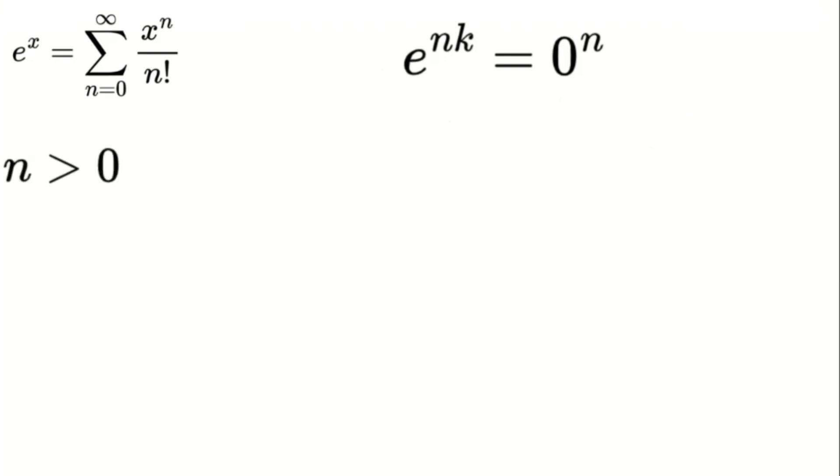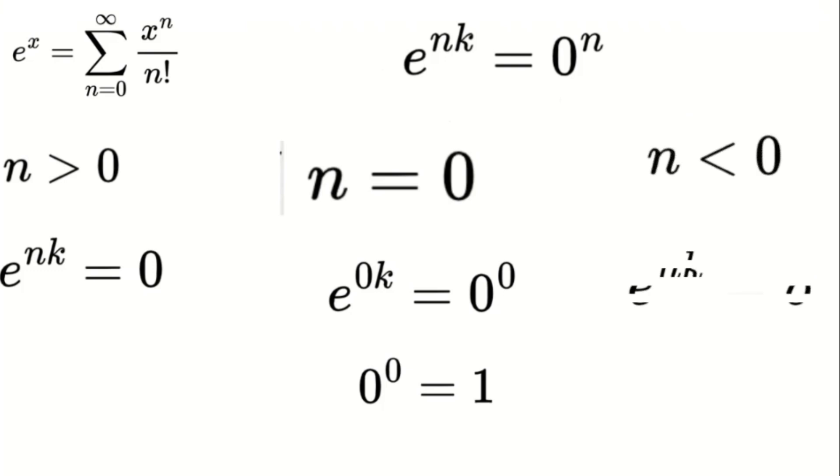If n is greater than 0, like 1, 2, 3, and so on, then 0 to the power of n equals 0. If n is equal to 0, then 0 to the power of 0 equals 1. This is a convention often used in mathematics, although it's sometimes debated. If n is less than 0, like negative 1, negative 2, and so on, then 0 to the power of n becomes undefined in the real number system, often representing infinity.